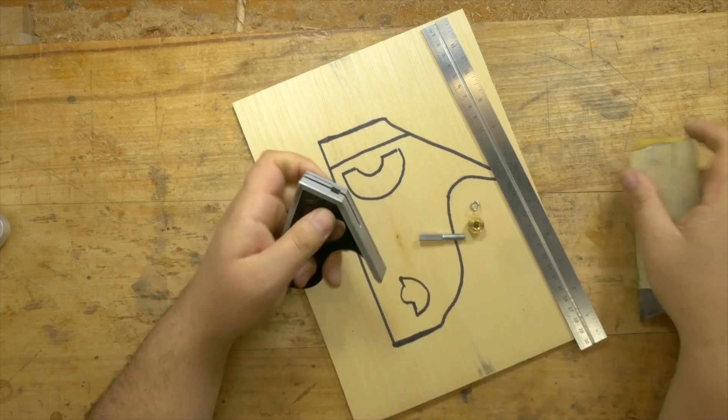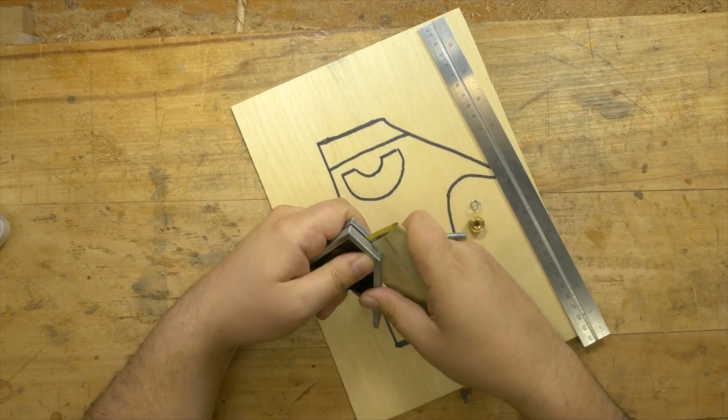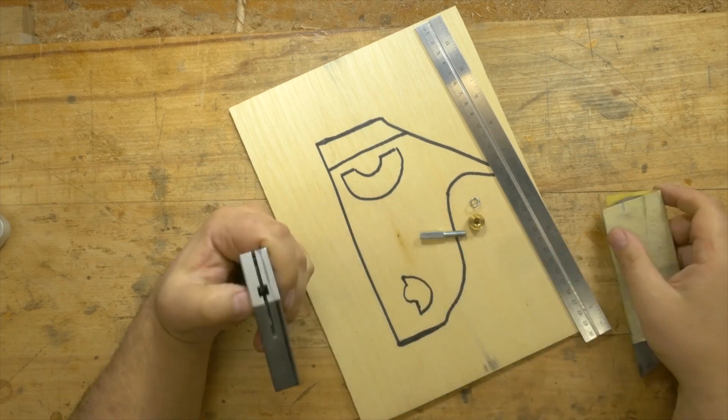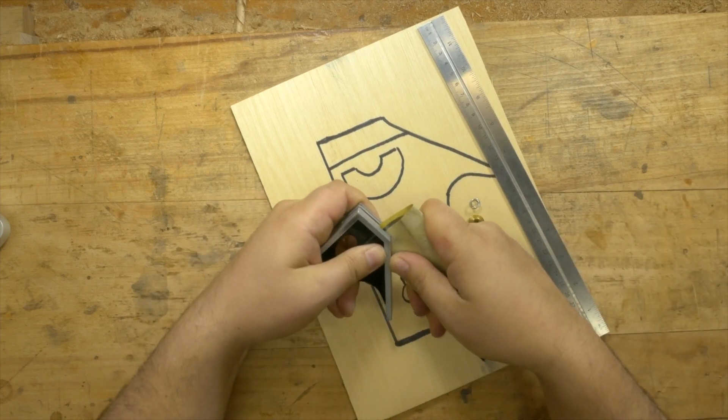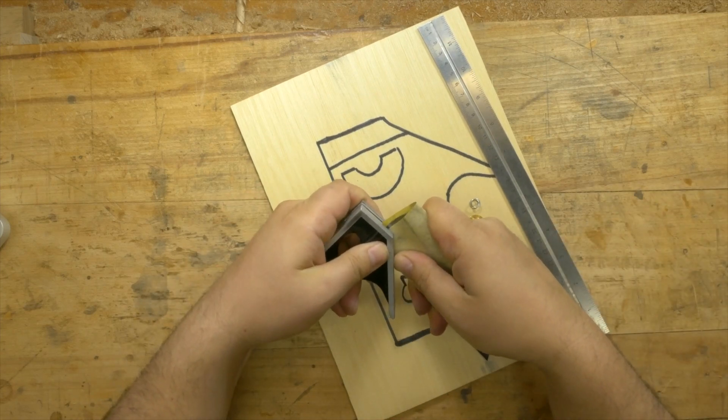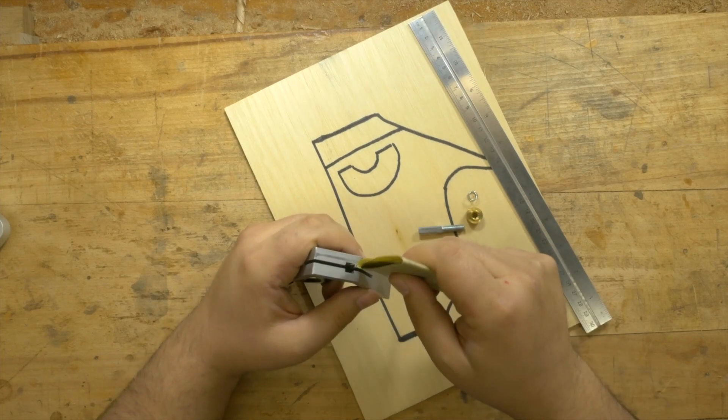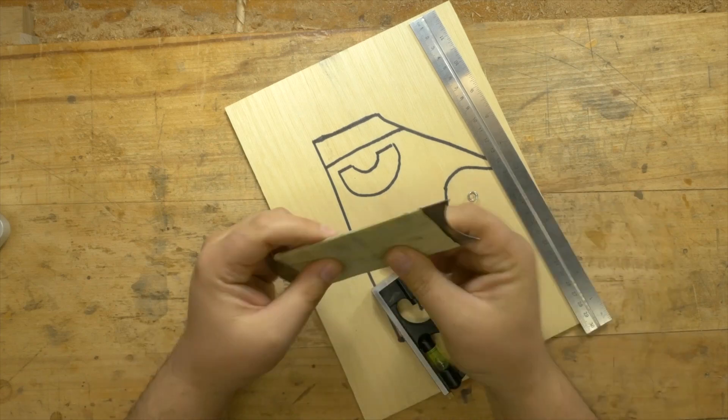A lot of people will say to use a file for this, but with these cheap squares I've found that to be much too aggressive. Instead, I use a piece of 220 sandpaper wrapped around a card scraper. Even with this fine of a grit it only takes a couple of swipes to true up a square like this.